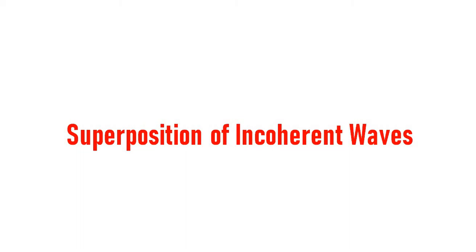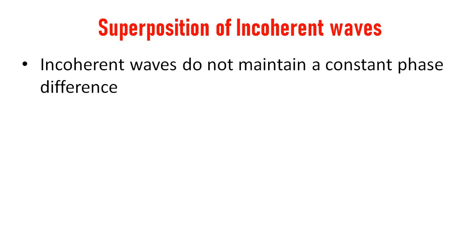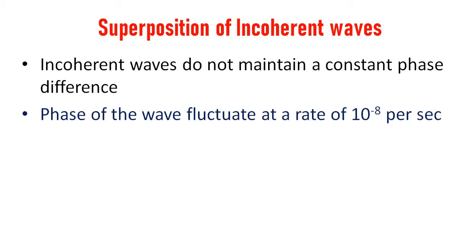Superposition of incoherent waves. Incoherent waves do not maintain a constant phase difference. We have already discussed the properties of coherent waves and incoherent waves. For any common light source, or for any incoherent waves, the phase of the wave is not constant but changes at a rate of 10 to the power of minus 8 per second.